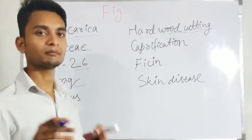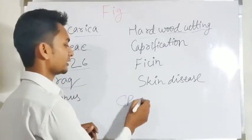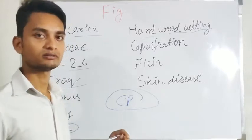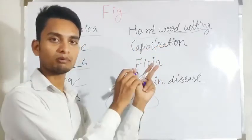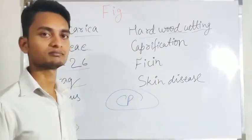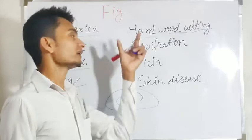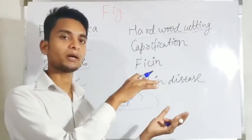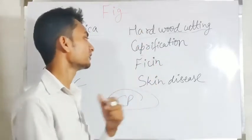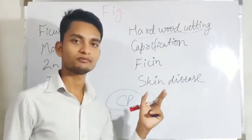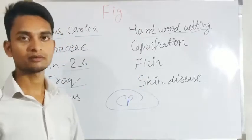First of all, hum jante haye kis prakar se pollination hota haye. Cross-pollination ke madhyam se ismein pragati hoti haye — its short form is CP. Caprification is a process of pollination. Fig mein pollination hone ki prakriya ko hum caprification kehte haye.